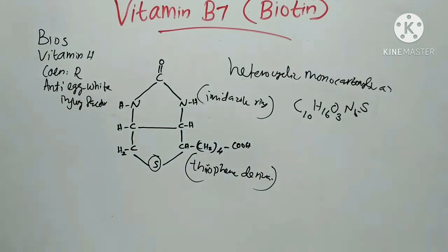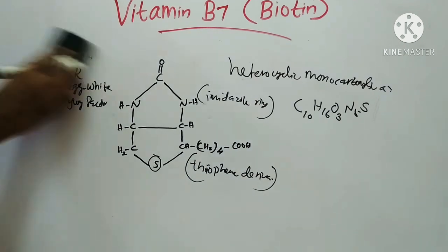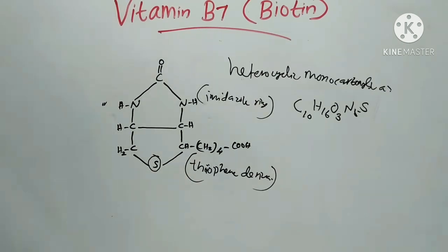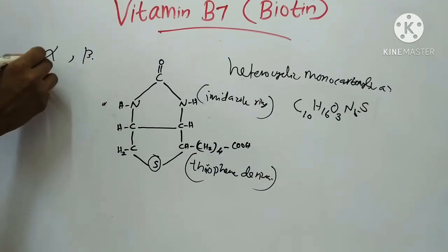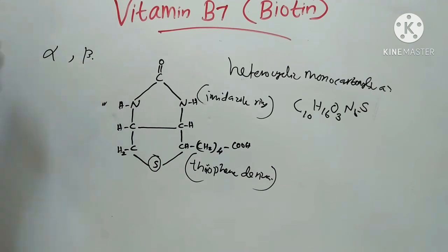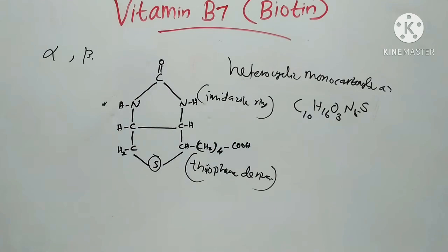There are two forms of Vitamin B7: alpha-biotin and beta-biotin. Alpha is found in egg yolk and beta is found in liver. These two differ only in the nature of their side chain. Biotin also occurs in free form and in bound form. Bound forms include biocytin, desthiobiotin, and oxybiotin.